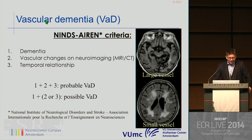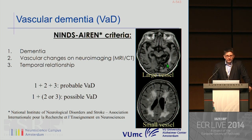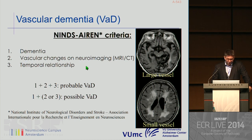Vascular dementia is also a very heterogeneous disease in terms of imaging findings. We have to differentiate between small vessel disease and large vessel disease. Large vessel disease has to affect the dominant hemisphere. Vascular dementia is clearly defined by having cognitive impairment in combination with vascular changes on MR, and there has to be a temporal relationship between these two findings.